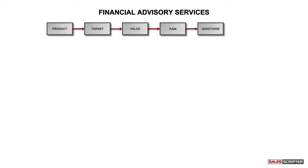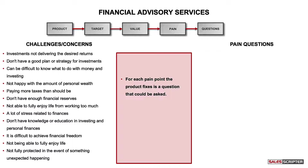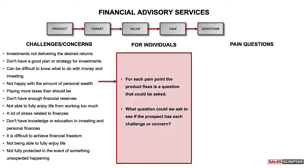The next step is to identify good questions to ask. I personally believe the best salesperson is the one that asks the best questions. This process will help you create an optimum list of questions. We start with creating pain questions — questions that probe to see if the prospect has the pain that you can help make go away. To create our list of pain questions, bring back the pain points, because for each pain point you help to solve, there's a question or two you can ask. Look at each pain point and ask: what question could we ask to see if the prospect has that challenge or concern? Keep in mind the target audience of individuals.